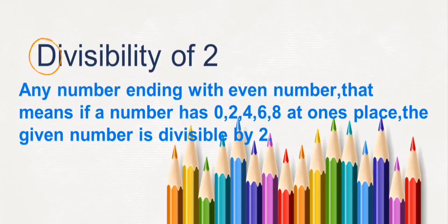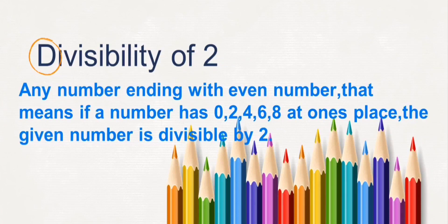Any number ending with an even number — that means if a number has 0, 2, 4, 6, or 8 at the ones place — the given number is divisible by 2. If a number is not ending with 0, 2, 4, 6, or 8, the number cannot be divided by 2.